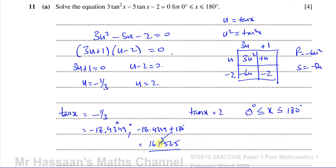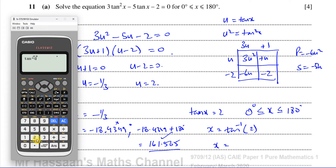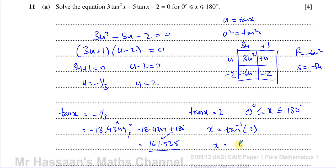The next angle sharing the same tan ratio would be outside the range, so 161.565° is the only solution from tan x = −1/3. For tan x = 2, inverse tan gives 63.435°. If we add or subtract 180° from that, we go outside our range, so 63.435° is the only solution from this part.